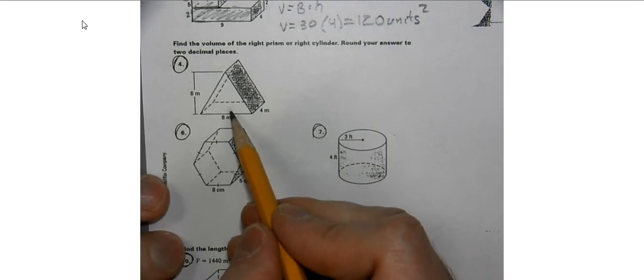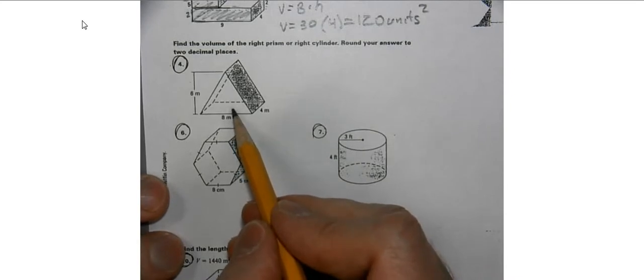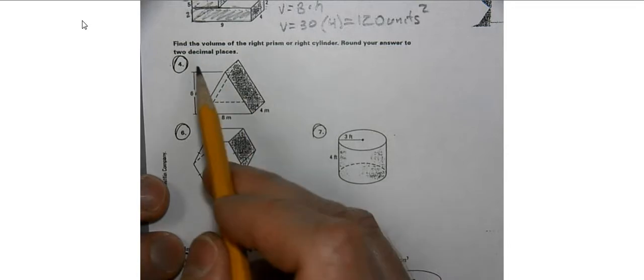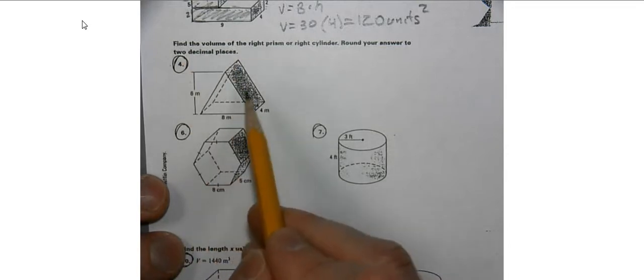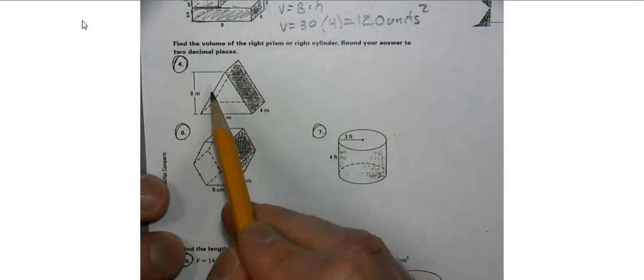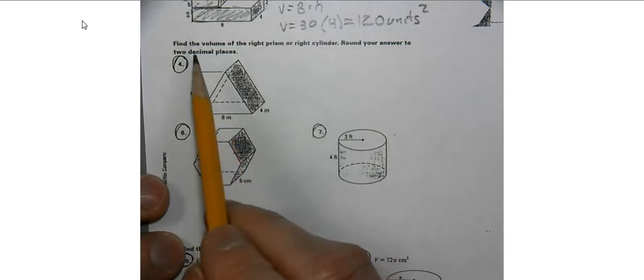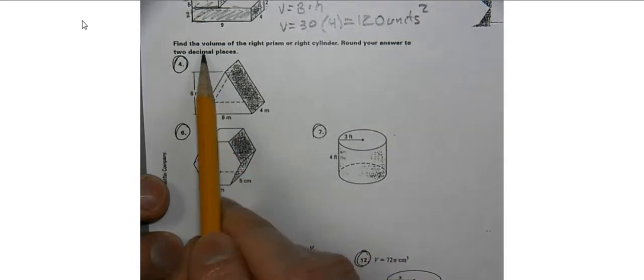For this triangle, we'll do the same type of thing. We're going to find the volume of our triangular prism. We'll round our answers to the nearest decimal point.